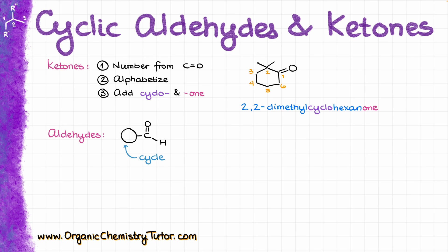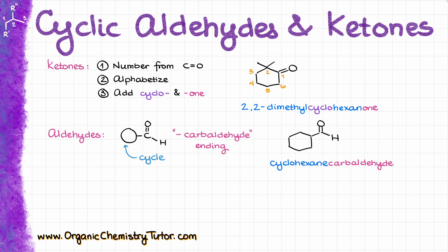With the aldehyde, though, it's a little bit different. The thing is, it is impossible to have the aldehyde directly be a part of the ring — it can only sit on the ring but never be a part of the ring itself. And if we do not have any additional carbons between our aldehyde functional group and the cycle that it is sitting on, then in that case we can use a special style of nomenclature where we are going to be using carbaldehyde as the ending. So, for instance, this molecule over here would be called cyclohexanecarbaldehyde.